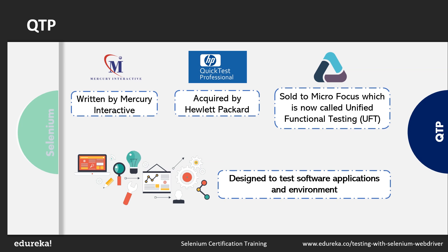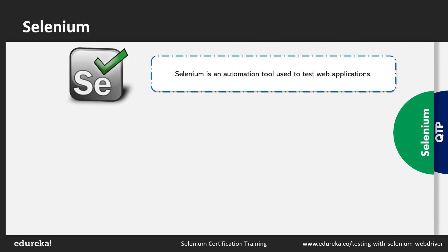Now let's understand what Selenium is. Before getting to the technical definition, let's look at the history of Selenium and how it came into existence. The name Selenium comes from a joke made by Jason Huggins while writing an email mocking a competitor called Mercury, saying you can cure mercury poisoning by taking selenium supplements — selenium being a chemical element. The others who received the email took the name and started digging deep into it, and that's how the name Selenium came into existence.